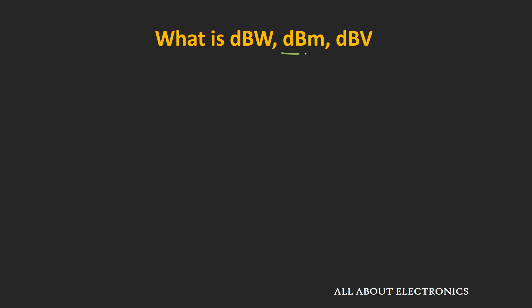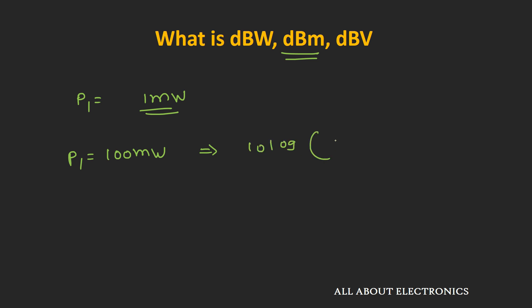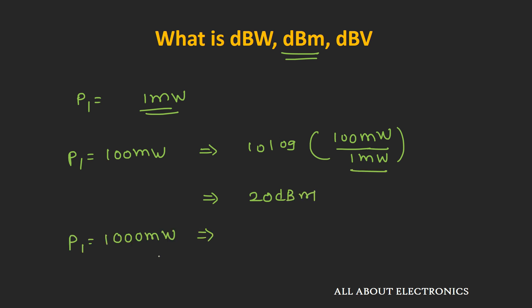Now let's talk about dBm. When representing any power P with respect to a reference of 1 milliwatt, it corresponds to dBm. For example, 100 mW represented in decibels relative to 1 mW is 10 log(100 mW / 1 mW) = 20 dBm. Similarly, 1000 mW (i.e., 1 W) in dBm form is 10 log(1000 mW / 1 mW) = 30 dBm.